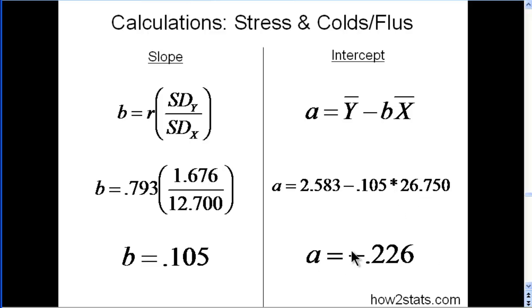What does intercept mean? I'll remind you, the intercept is the value of y, colds, when x, stress, is 0. So if somebody had 0 stress, we'd expect them to have experienced 0 colds. Now it's close to 0. It's actually negative 0.226. A person can't experience negative colds.